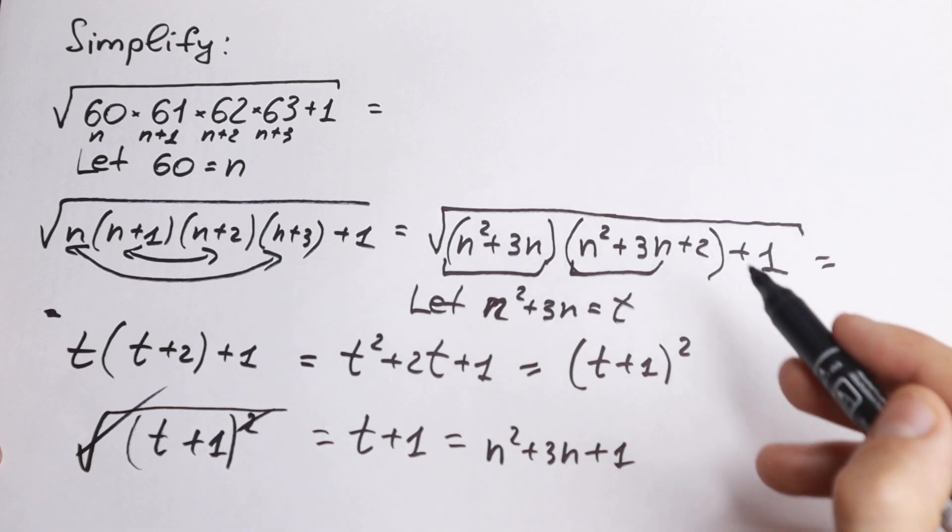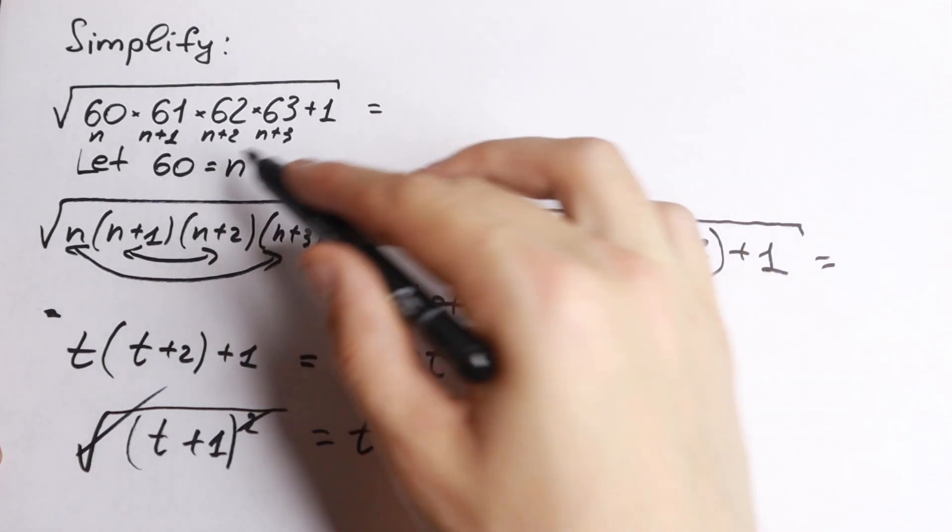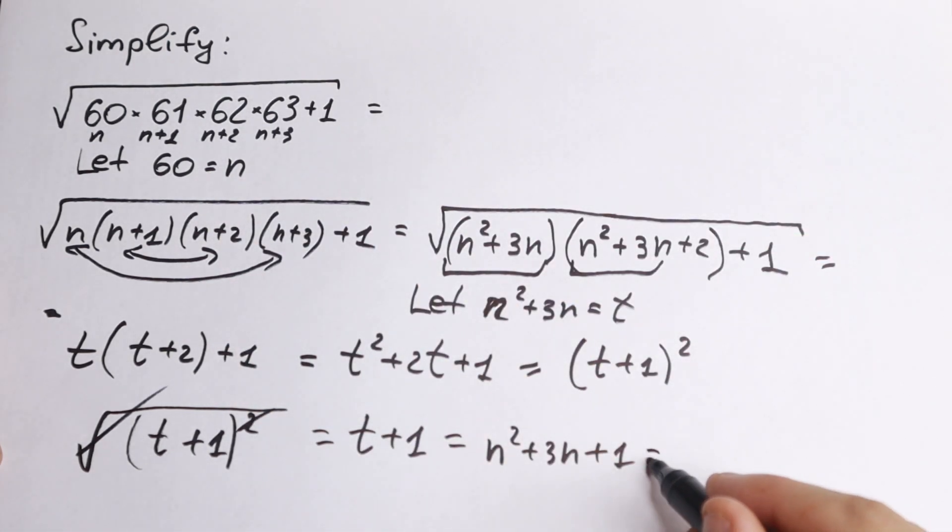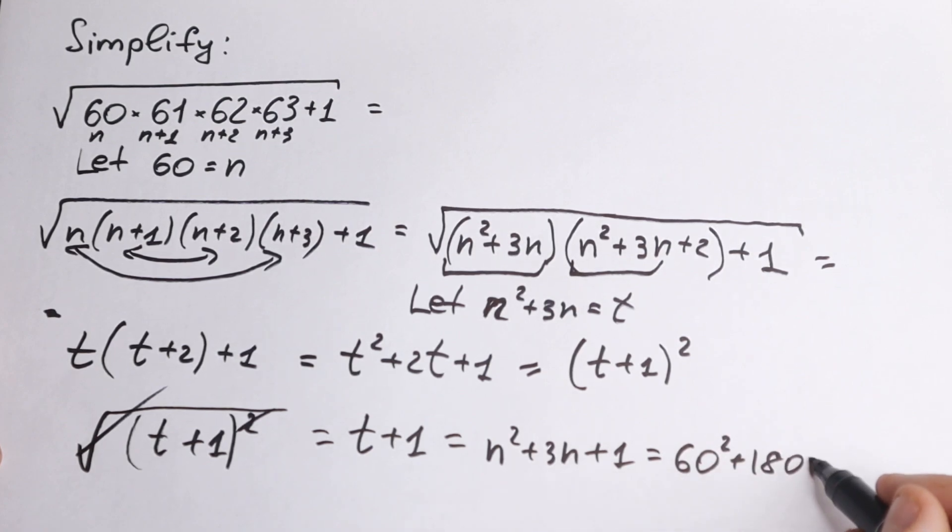And the last step, let's go to our first substitution. So n equal to 60. So we will have 60 square plus 180 and plus 1. Adding all of these, we'll have 3,681. This is our answer.